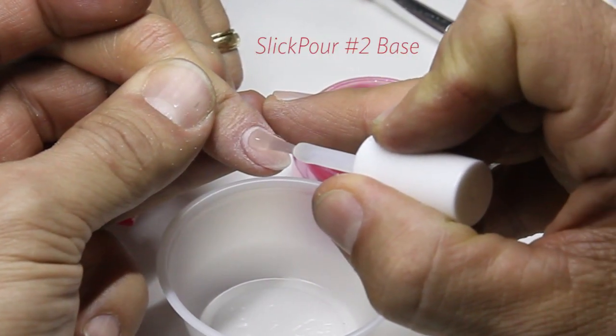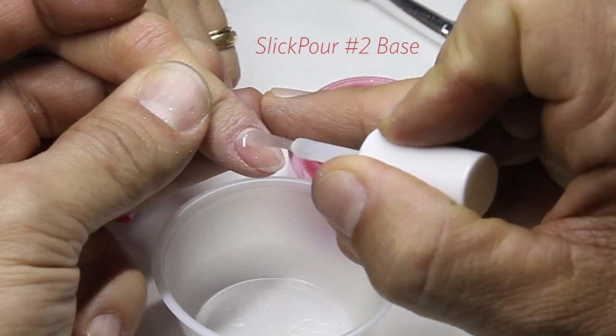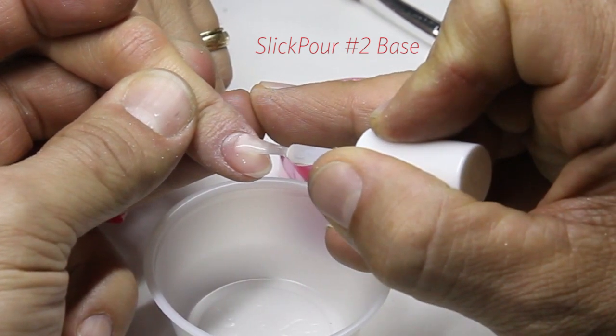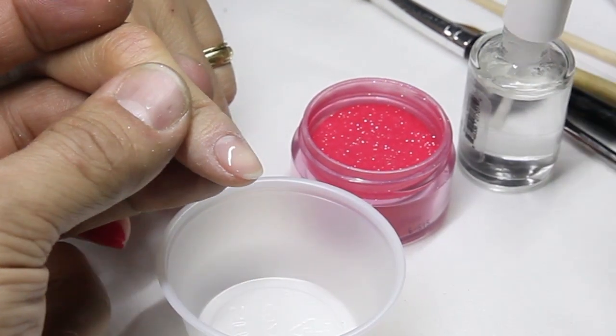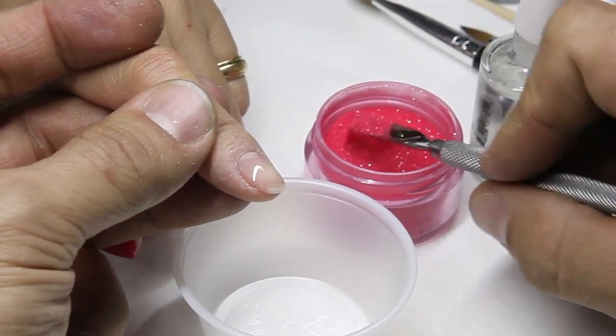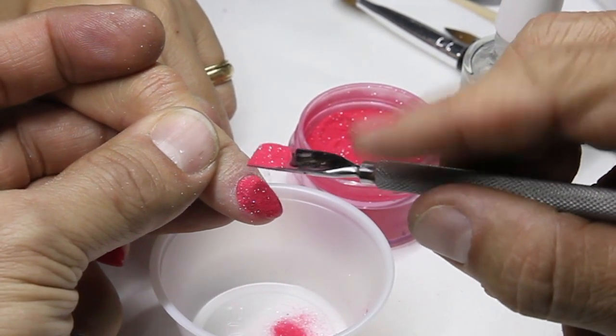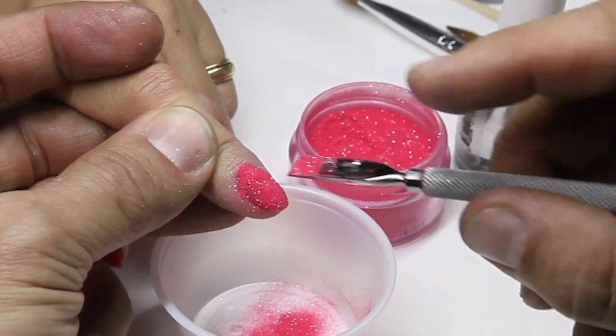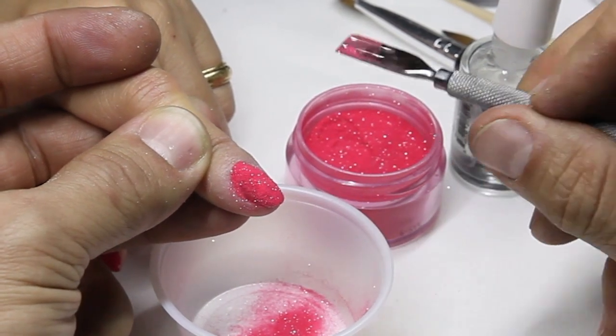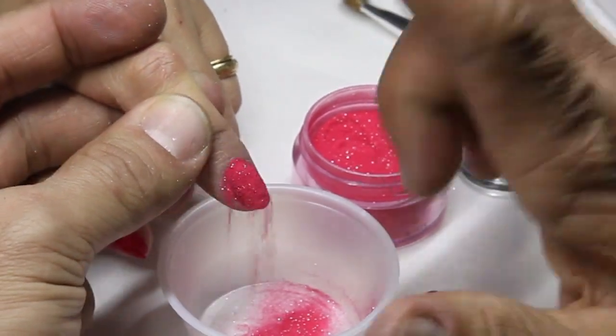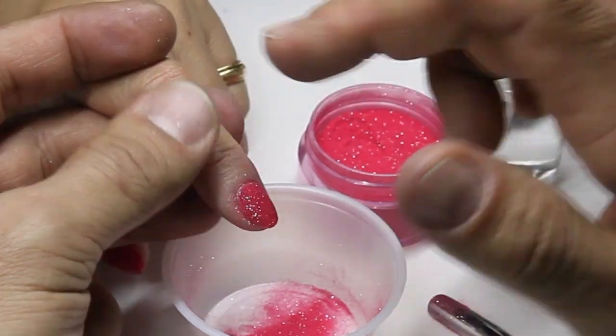Look at how much base I have - a nice healthy amount. Watch this. I don't need a lot. You see this? Tap, tap, tap. This is how you get controlled application. I don't need a lot of product. I just use the edge of my spoon, tap it off.